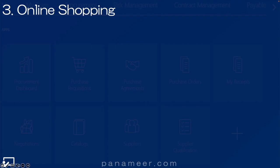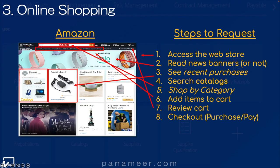Let's take a look at online purchasing — I'll use Amazon as an example since most of us shop on Amazon. Here are the steps we use when we purchase in an online model, and notice they're similar: we access the web store, we read the banners or not, you can see your recent purchases. You search catalogs instead of aisles and sections, or you can shop by category. You still add items to cart — in this case a digital cart — then you check out. Notice this model is entirely catalog-based; you can't buy something on Amazon that's not in a catalog.